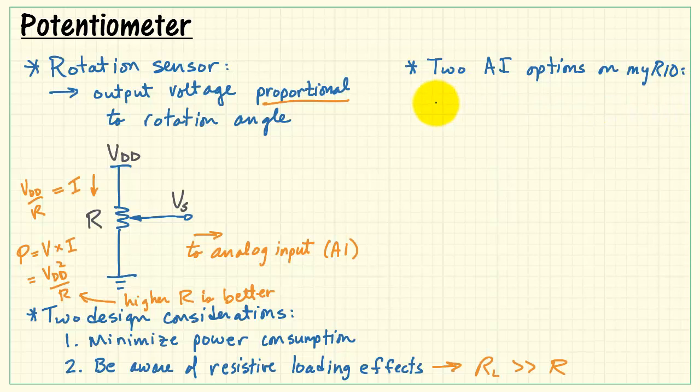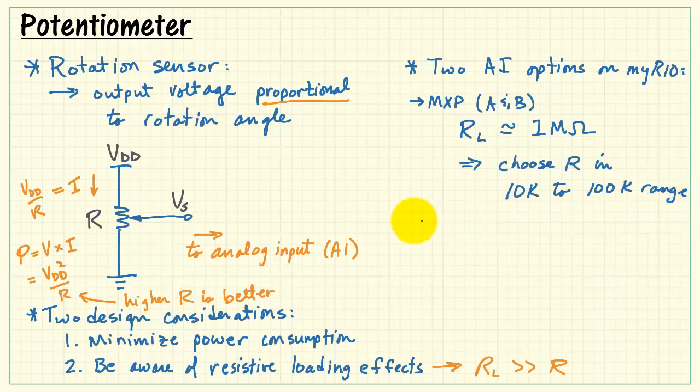We have two analog input options on MyRio. On the MXP side, that is connectors A and B, the load resistance is approximately 1 megaohm. That is, we want to choose our potentiometer resistance to be in the 10k to 100k range.